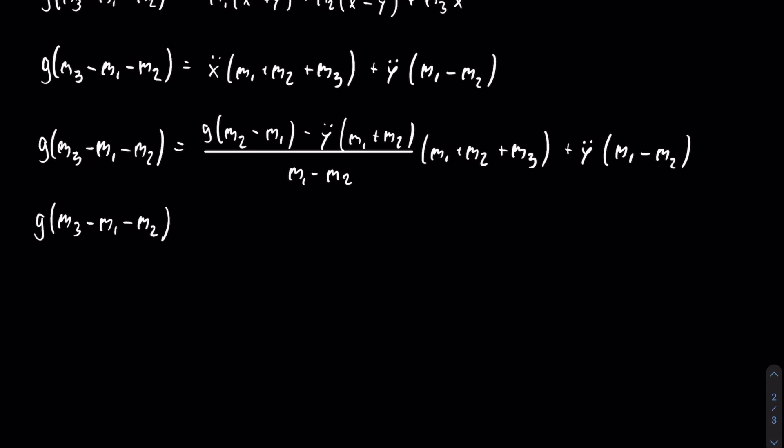You notice we have the m2 minus m1 divided by m1 minus m2, which is equal to negative one. When you distribute the right side, you'll get a negative g times m1 plus m2 plus m3, and then all that minus y double dot times this whole thing, which is a lot. And then after that, you just add in the same thing from the previous line.